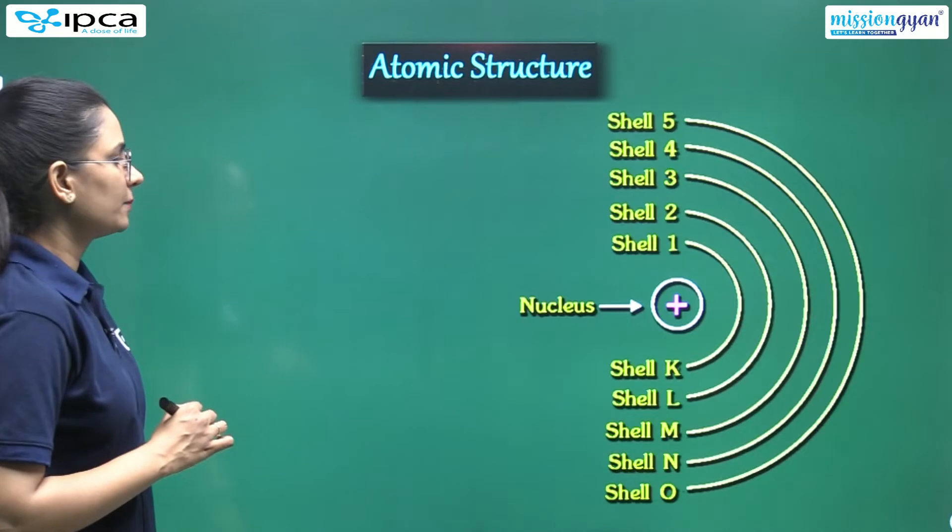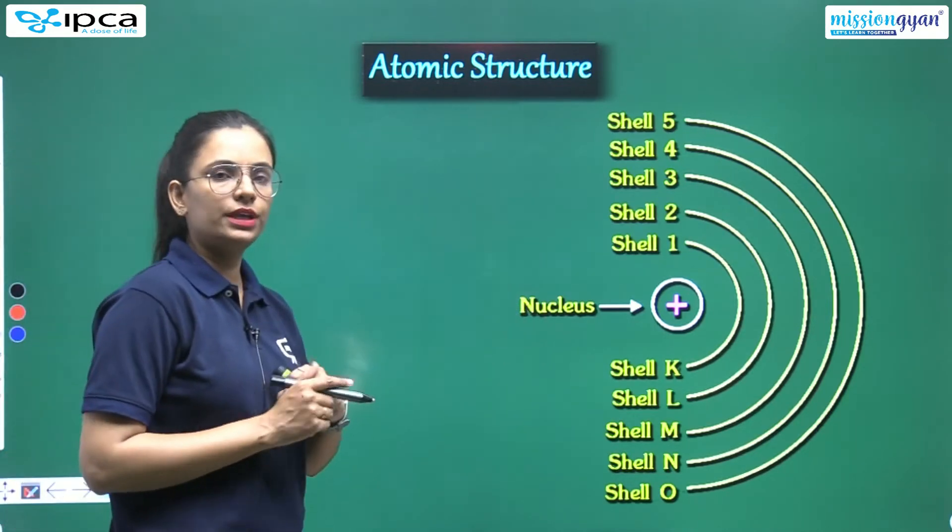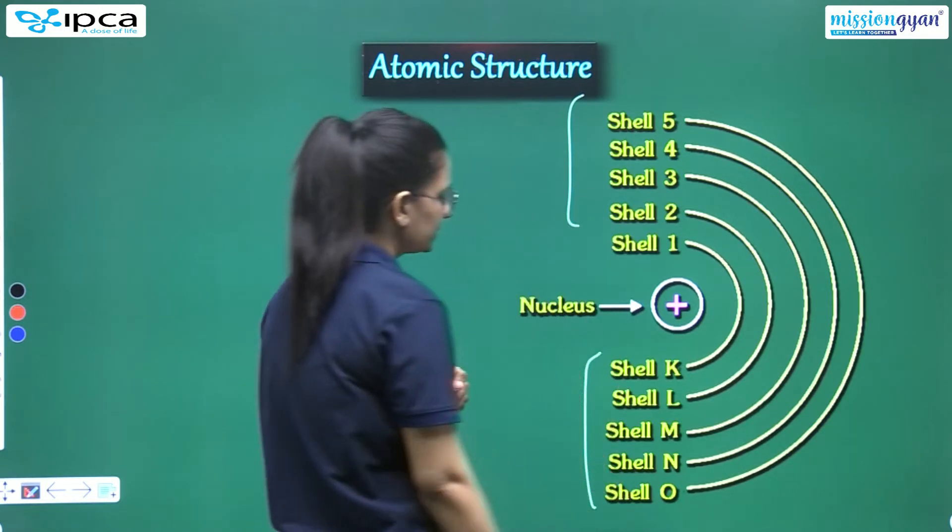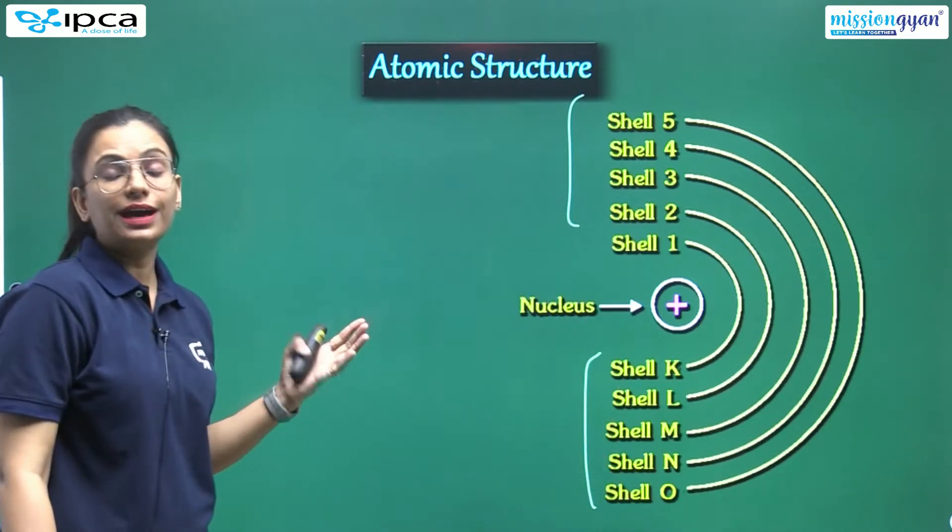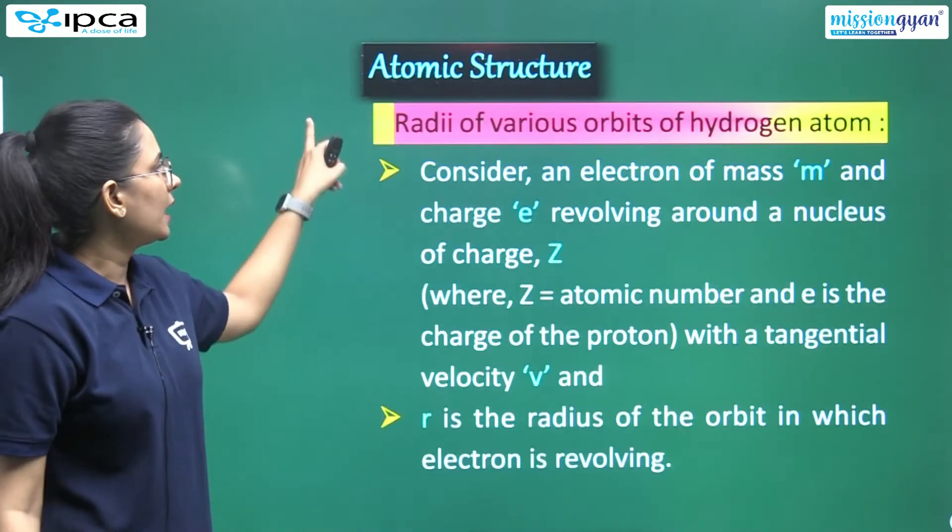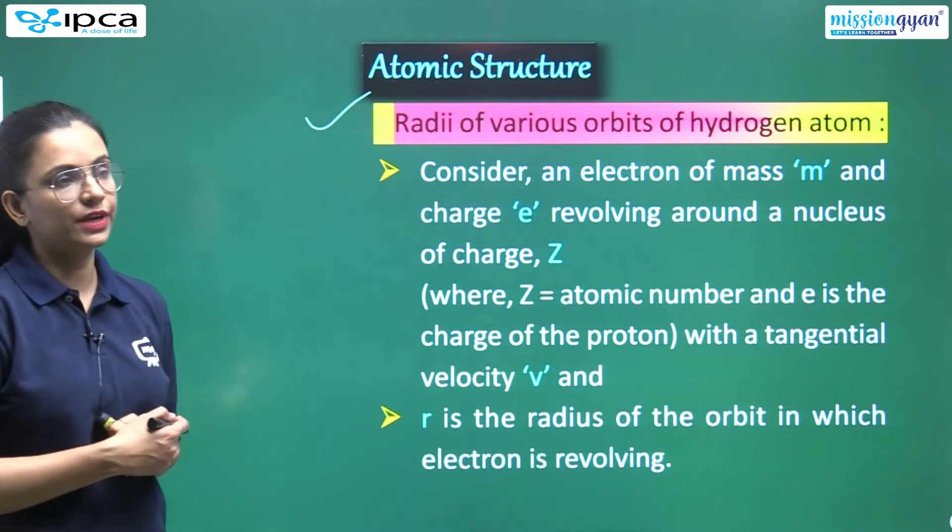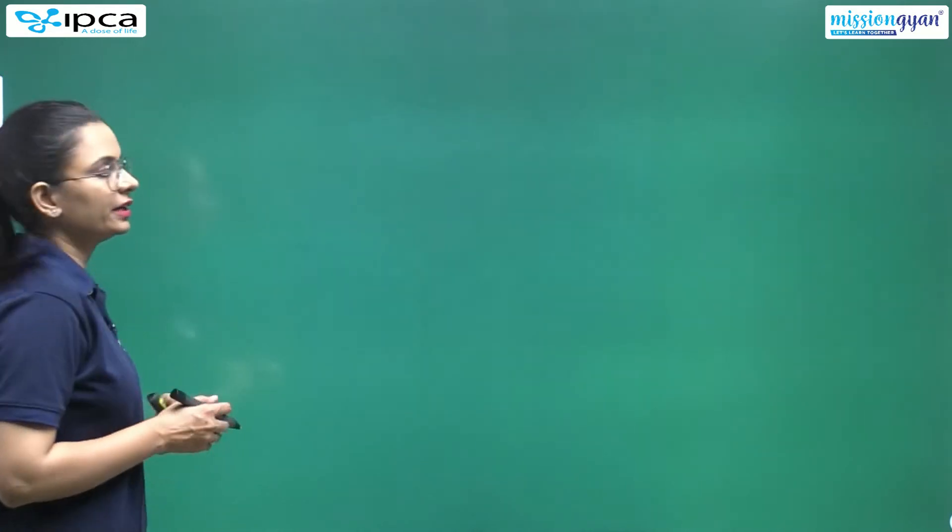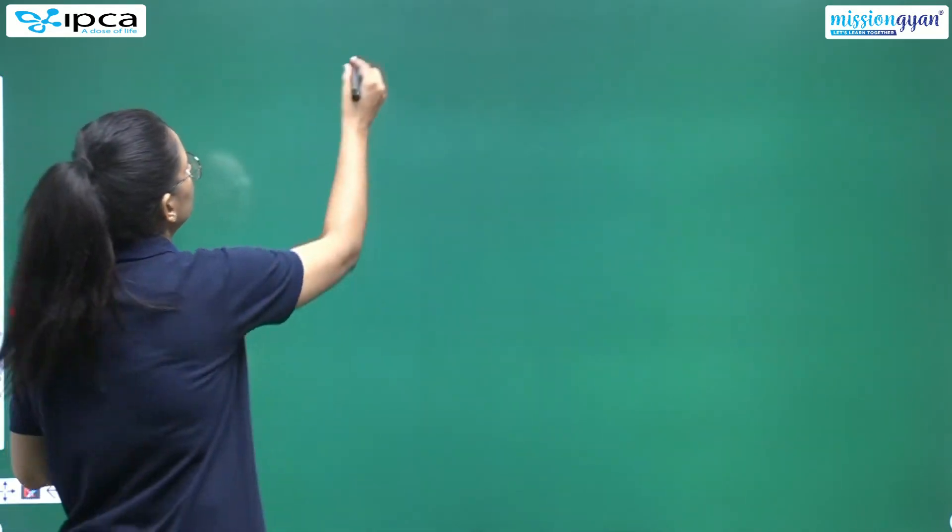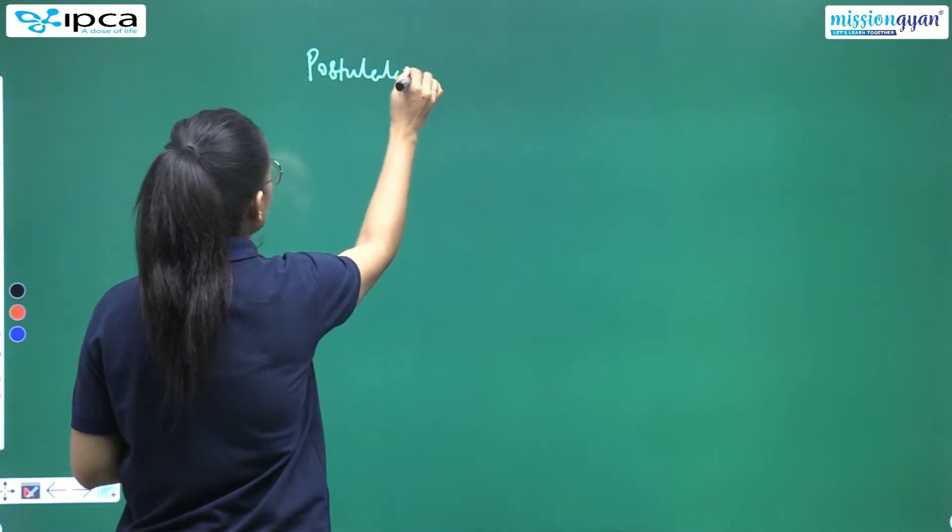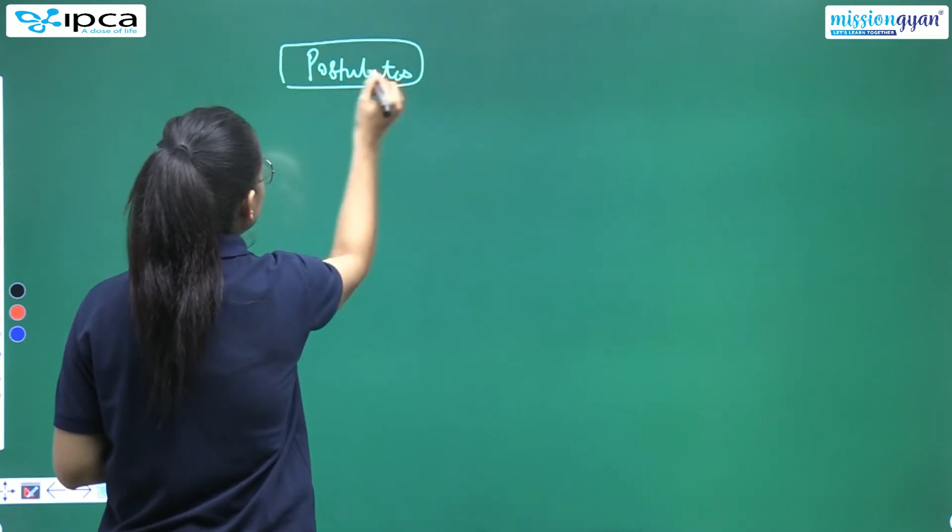Now look, this shells thing that I told you - in numbers 1, 2, 3, 4, 5, and in the form of shells as K, L, M, N, O - where will they be? Away from the nucleus. Now we have to see the radius of various orbits. Before that, let's revise the postulates once so there is no confusion, because ahead there are derivations of this part.